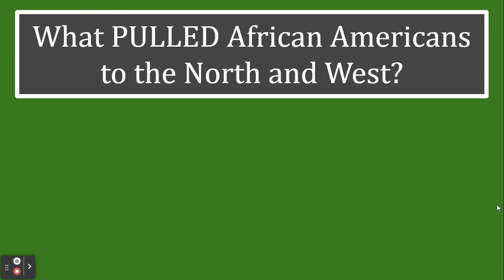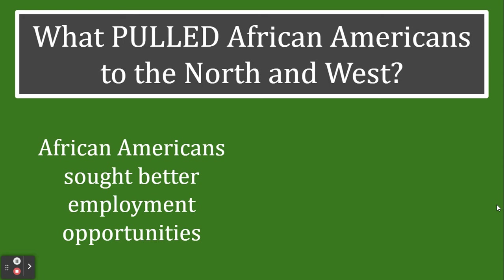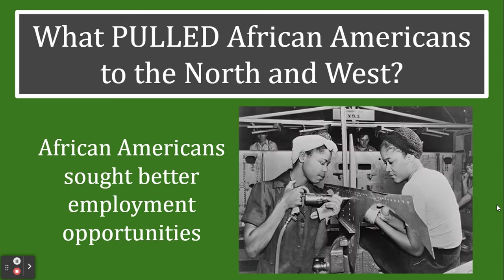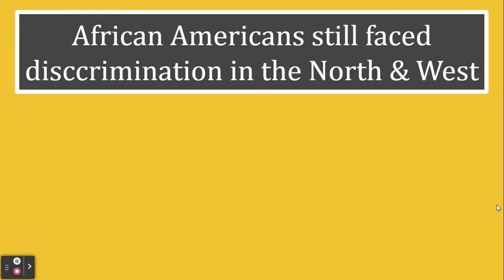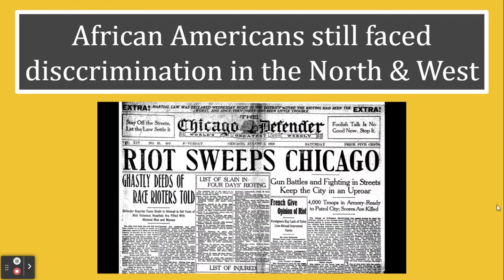There were also things that pulled African Americans to the north and west. African Americans sought better employment opportunities. Factories in the north — steel factories in Pittsburgh, meat packing in Chicago, the automobile industry in Detroit, and textile factories in New England — were hiring African Americans and paying them better than southern factories and farms, even if not always equal pay. However, African Americans still faced racial tensions, some violence and property damage in the north, especially in Chicago in 1919. It was just less discrimination than in the south.